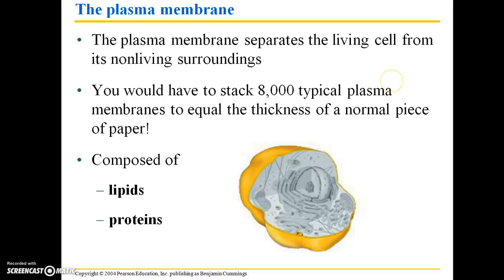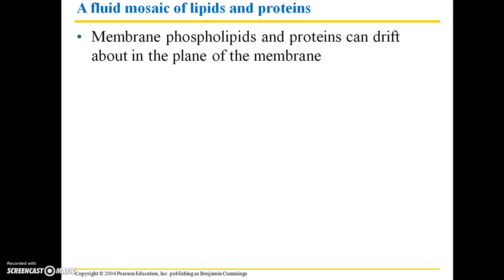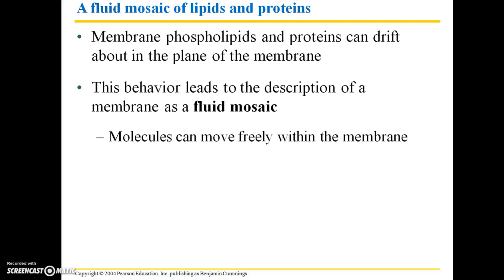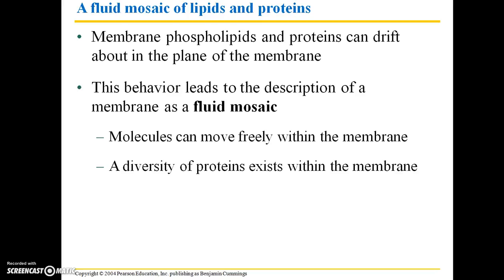The membrane is composed of lipids as well as proteins. Remember, lipids are various types of fats, and proteins are very versatile macromolecules with a variety of functions in our cells. The plasma membrane is often referred to as a fluid mosaic of lipids and proteins. Membrane phospholipids and proteins can drift about in the plane of the membrane — they're not rigidly set in place. This leads to the description of a membrane as a fluid mosaic: fluid because molecules can move freely within the membrane, and mosaic because a diversity of proteins exists within it.